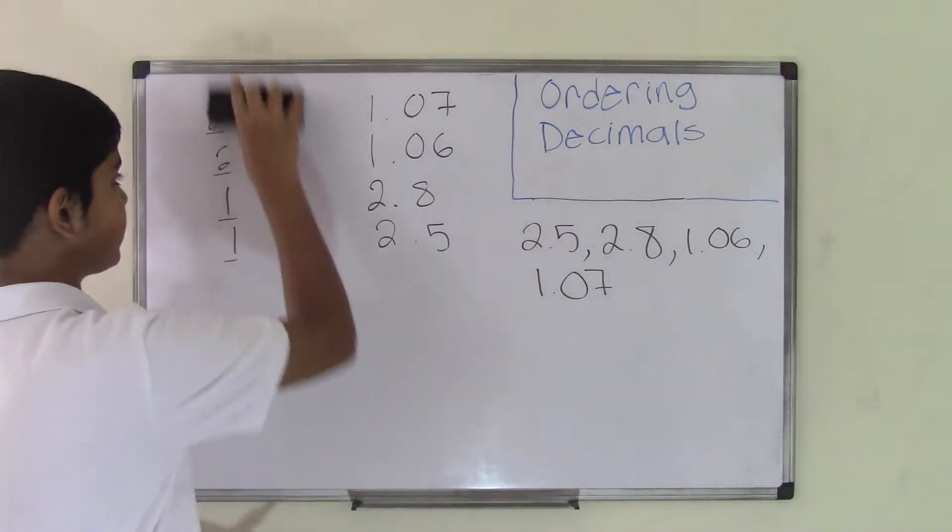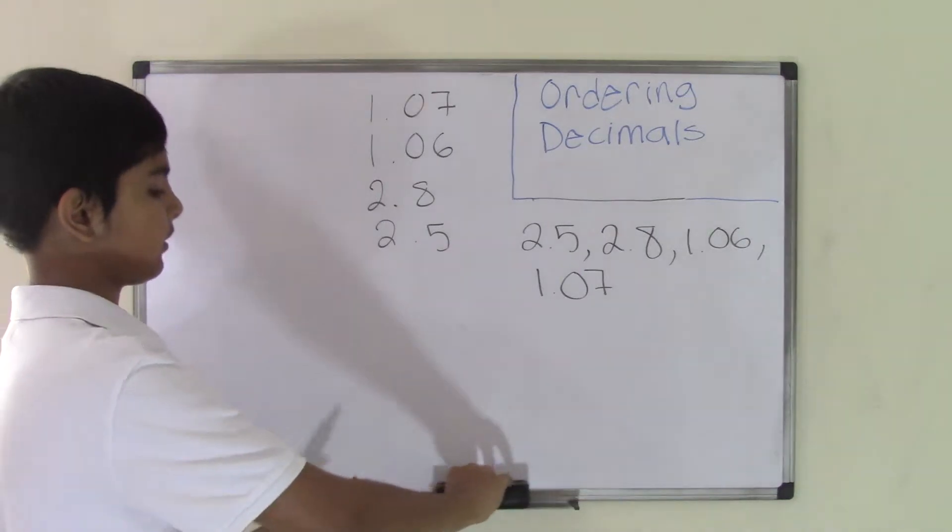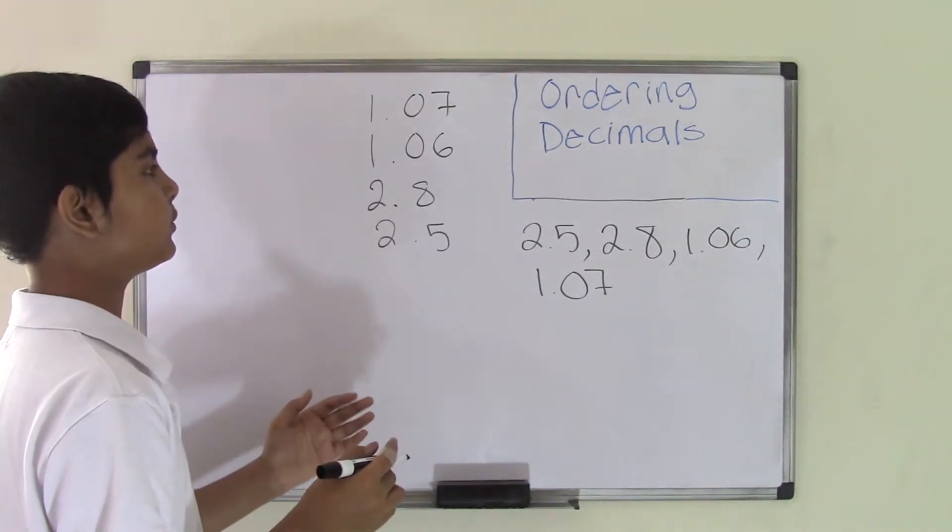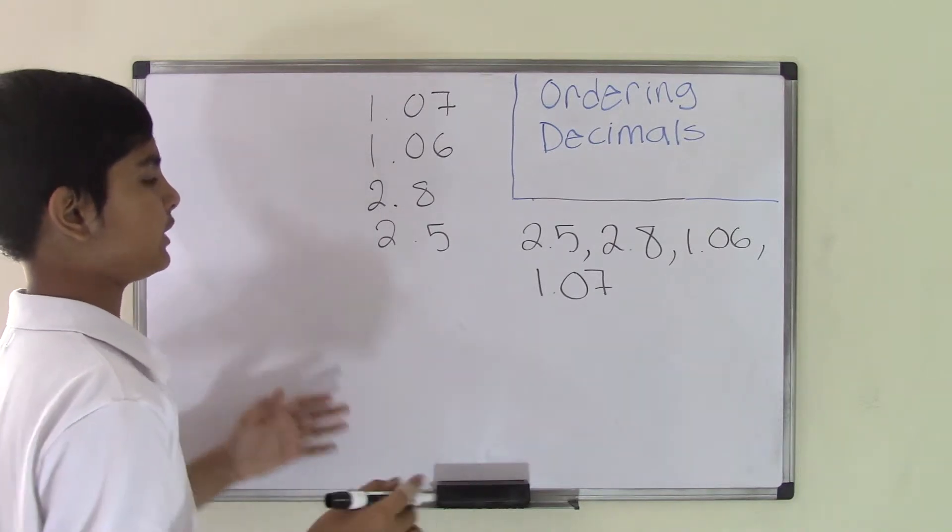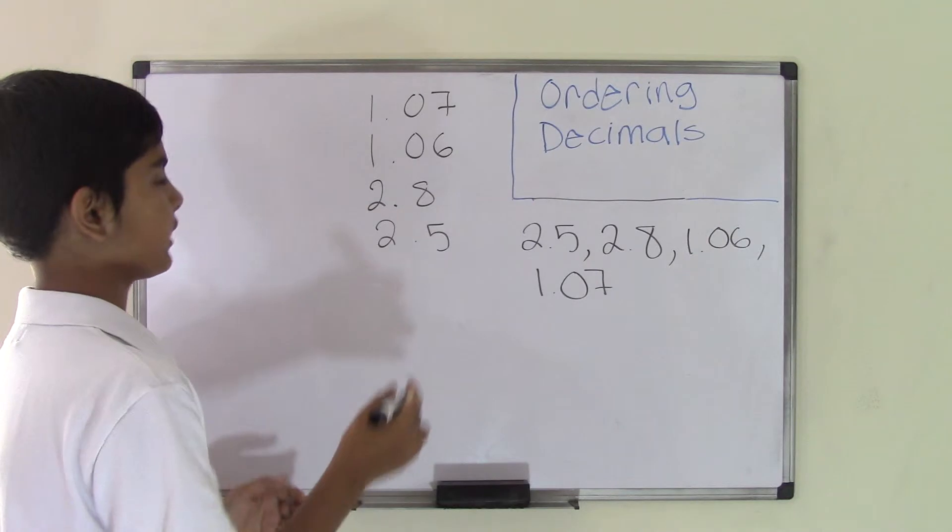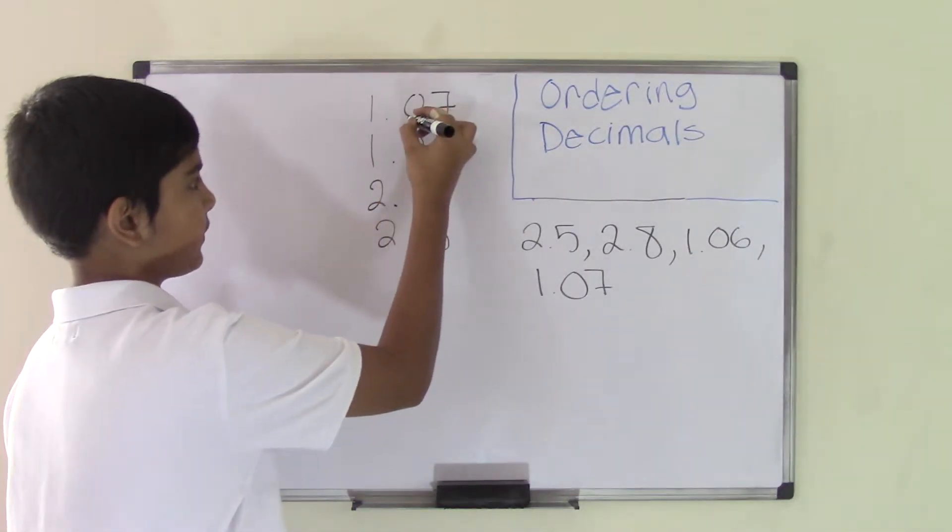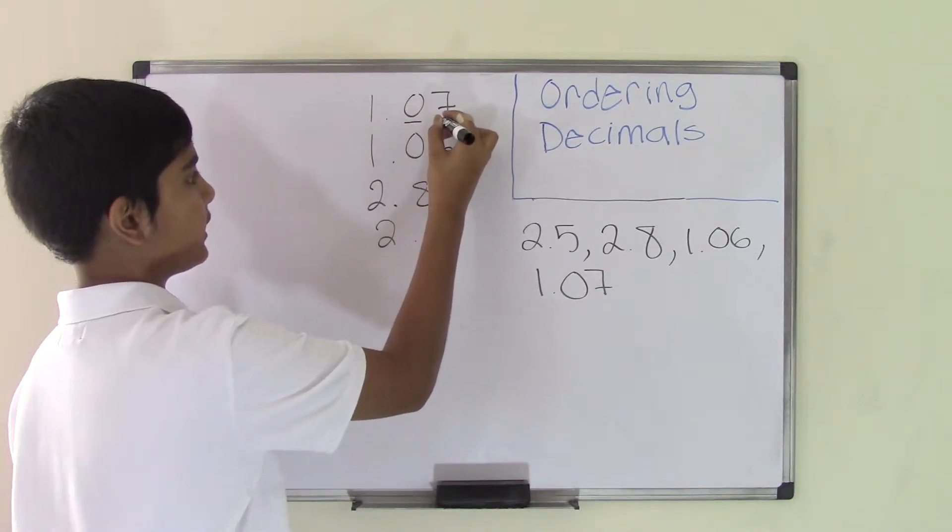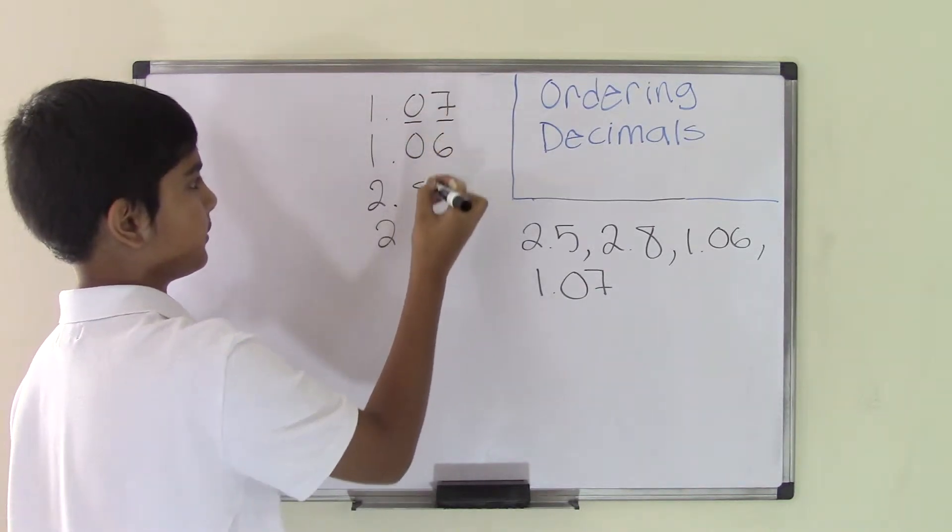Now you have the whole numbers aligned. We need to find which number will go first by looking at the decimal parts. For the first number, 1.07, in the tenths place value we have 0, and in the hundredths place value we have 7.